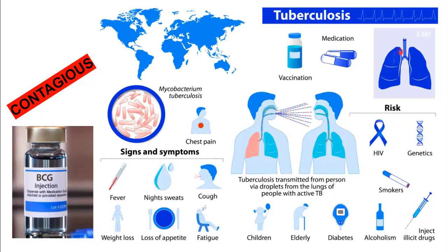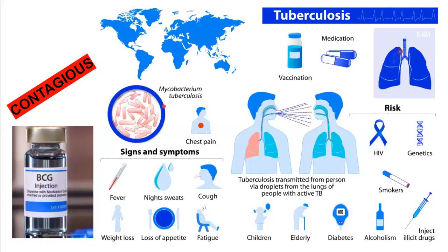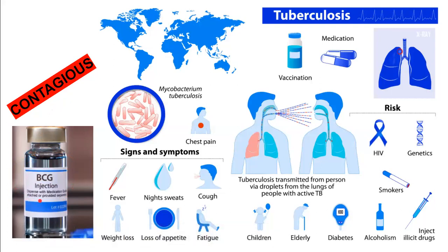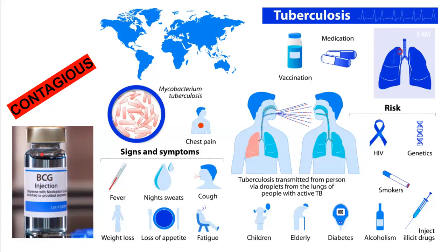Looking at an X-ray of a person with TB compared to a healthy lung, you can see scars and lesions in the upper corners of the lungs, which cause blood in the sputum. In developing countries, we are given the BCG vaccination at birth, which provides immunity against tuberculosis and protects us from the disease.